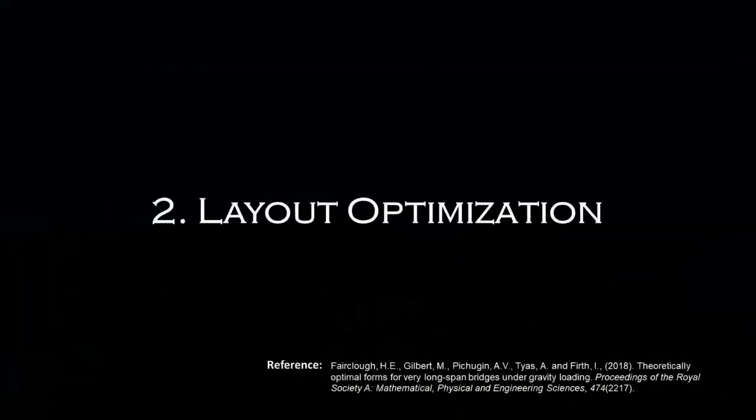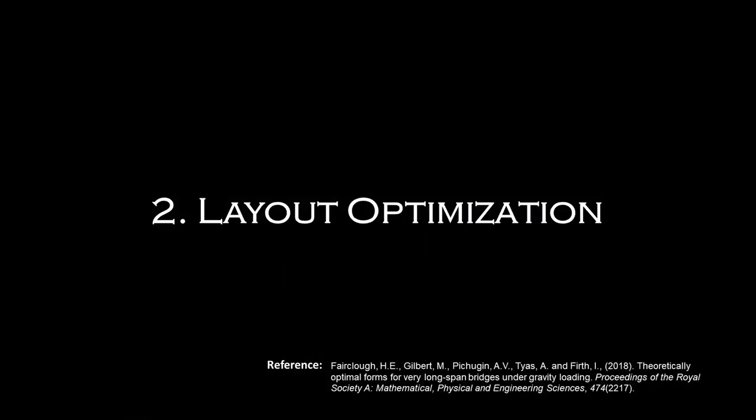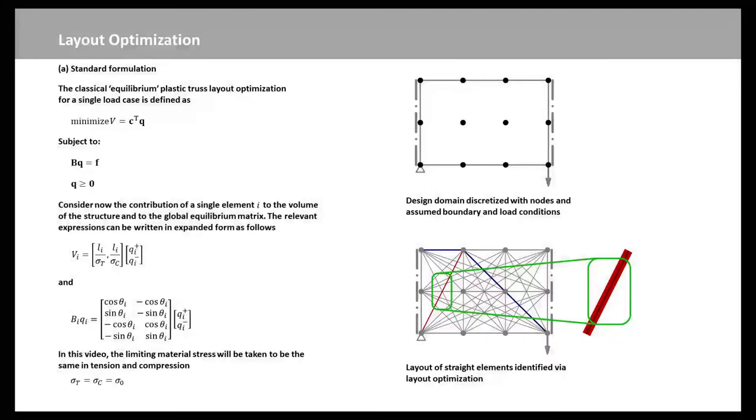Now we can try to introduce layout optimization. The standard weightless layout optimization procedure involves discretizing a design domain with a series of nodes, usually positioned on a uniform grid. These nodes are interconnected with potential truss elements forming a ground structure, and optimization is then used to find the minimum volume truss structure satisfying force equilibrium conditions.